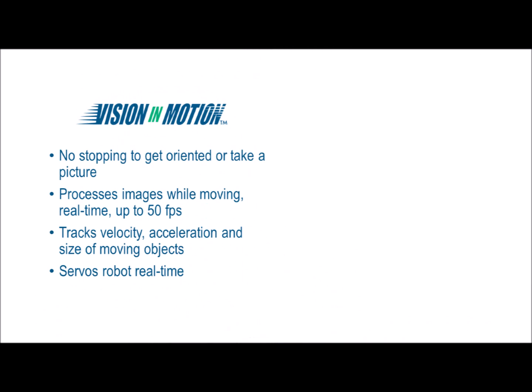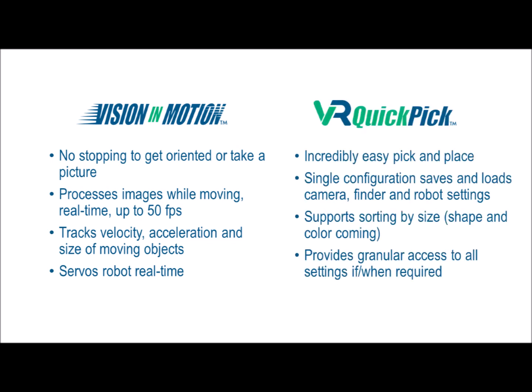In this video, you've seen our vision and motion technology in action. Unlike other systems, it processes images real-time, even while moving, up to 50 frames per second. It tracks the velocity, acceleration, and dimensions of moving objects, and servos the robot to pick them up. You've also seen how incredibly easy it is to set up and perform pick-and-place applications using VR QuickPic. A single configuration saves and loads everything. If needed, VR QuickPic provides granular access to pretty much all the settings you can imagine.